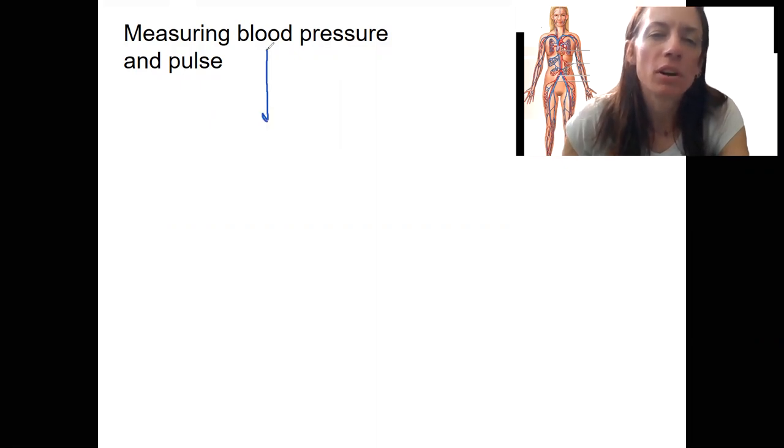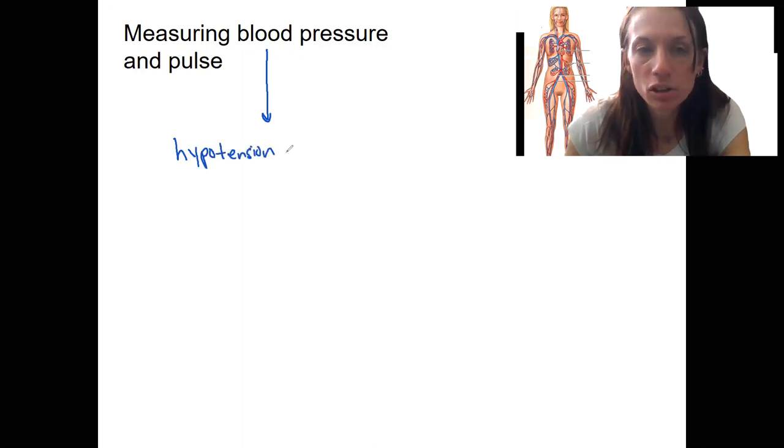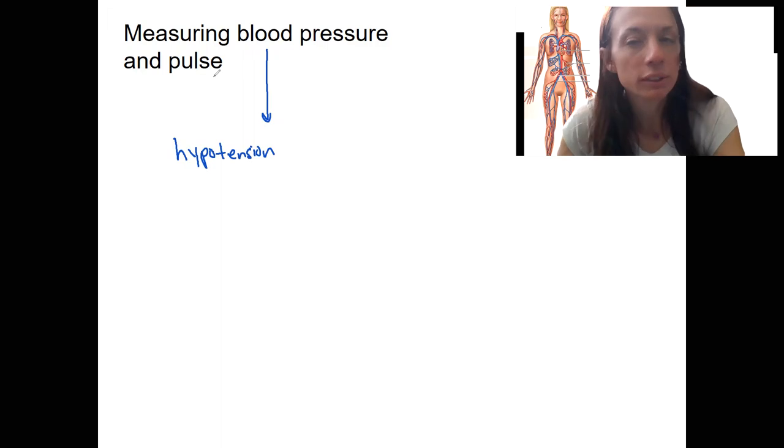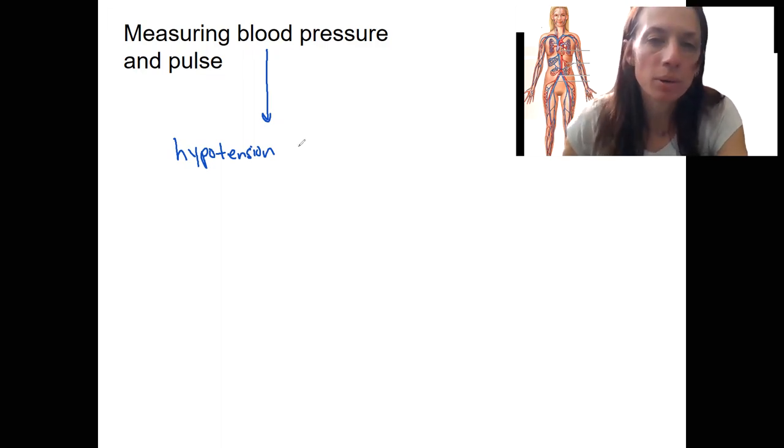So the main one referred to here is going to be blood pressure. So you've probably heard of hypo and hypertension. Hypotension is low blood pressure. You can measure this with a blood pressure cuff. We'll look at that and kind of a little bit with pulse too.